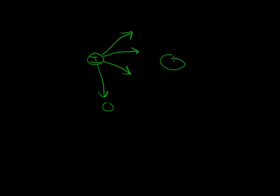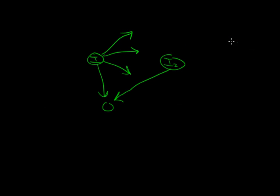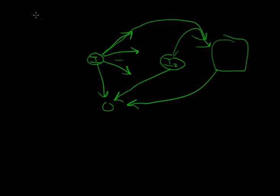Now, one function can produce two different outputs based on two different inputs — meaning different inputs can yield the same output — and you'll see that in a few seconds.